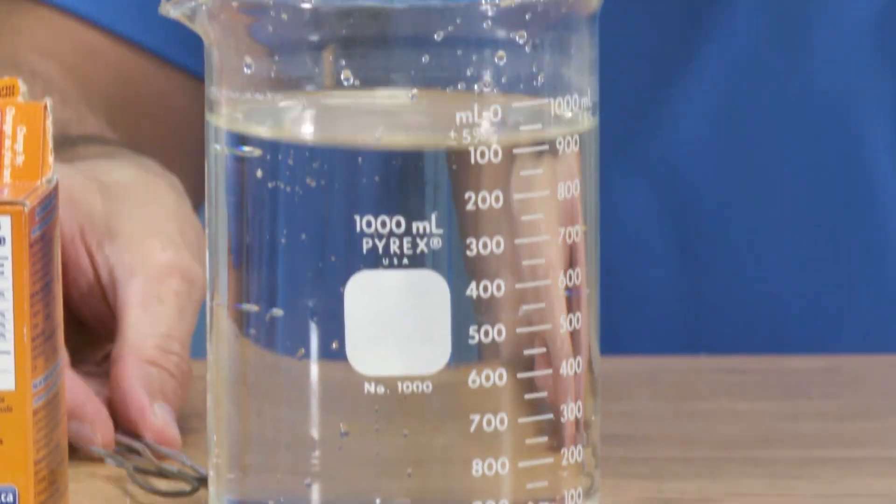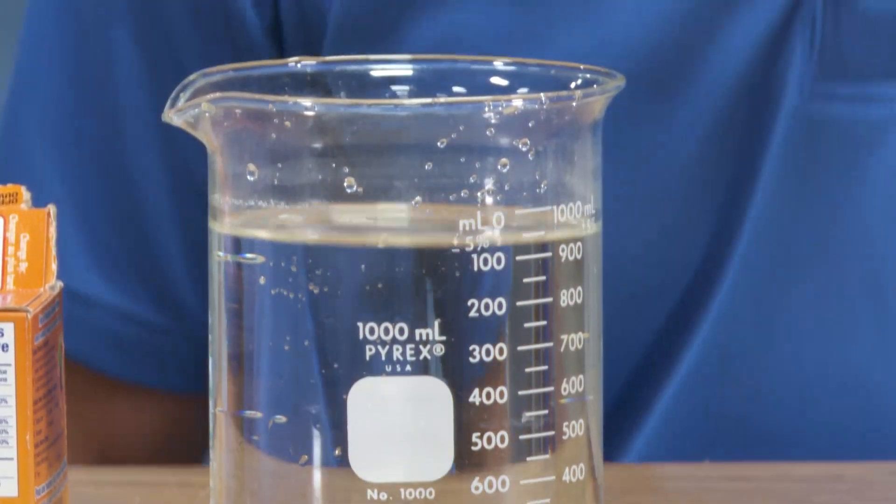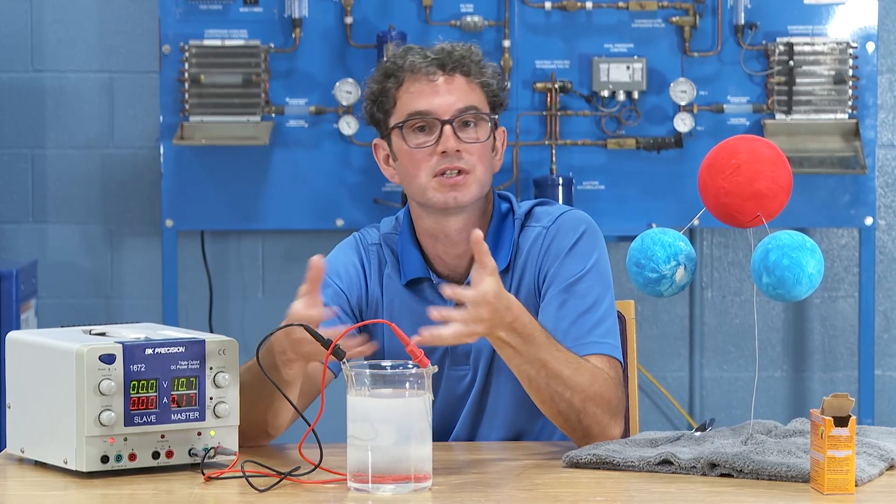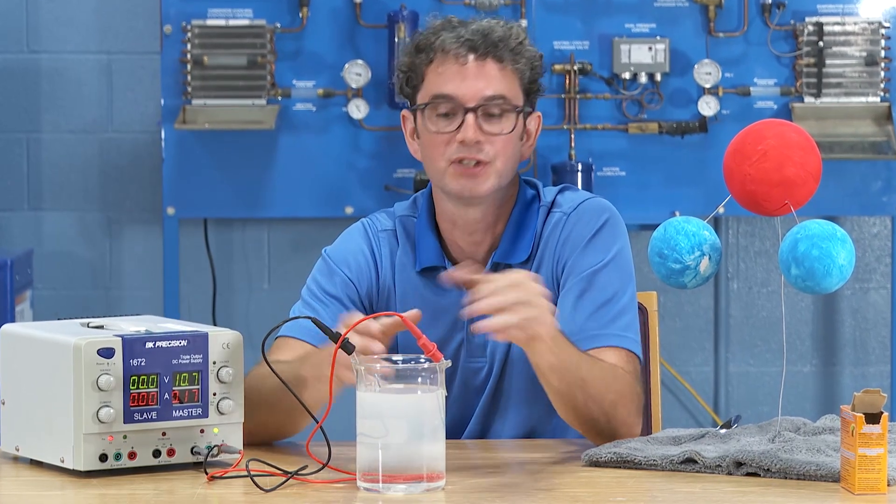The plan in Stephenville is to use wind energy to power a process called water electrolysis. So this is a very simple demonstration of electrolysis, of water electrolysis, where we're splitting the H2O into its constituents, H and O, or oxygen and hydrogen.